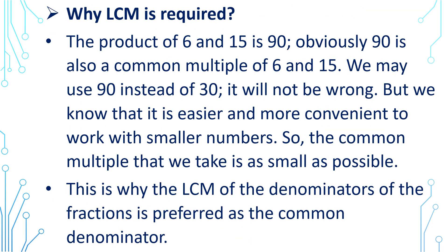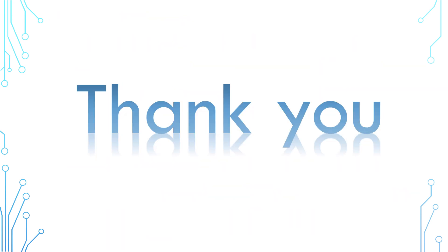Now I will explain why LCM is required. The product of 6 and 15 is 90, and 90 is also a common multiple of 6 and 15. We may use 90 instead of 30 — it will not be wrong. But it is easier and more convenient to work with smaller numbers. So the common multiple we take is as small as possible. This is why the LCM of the denominators of the fractions is preferred as the common denominator. I hope you understand the points we discussed in today's session. Thank you.